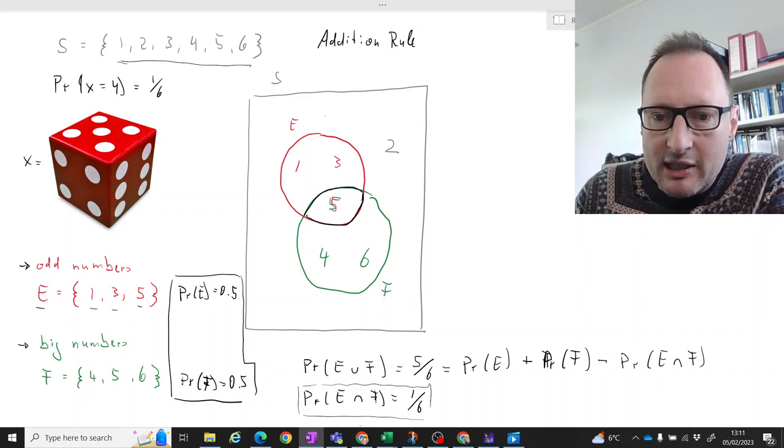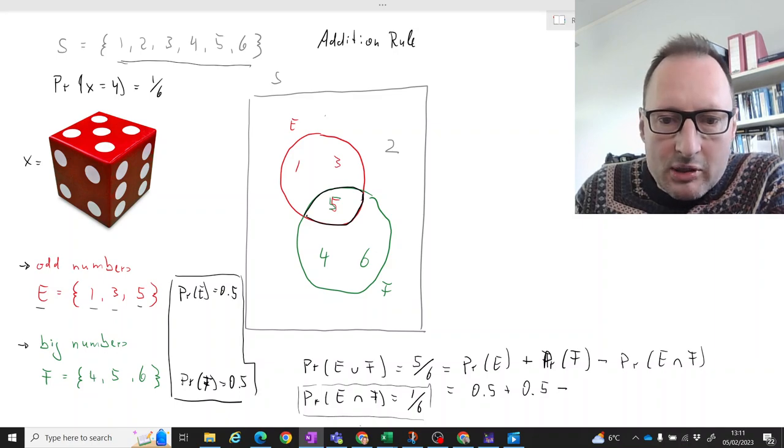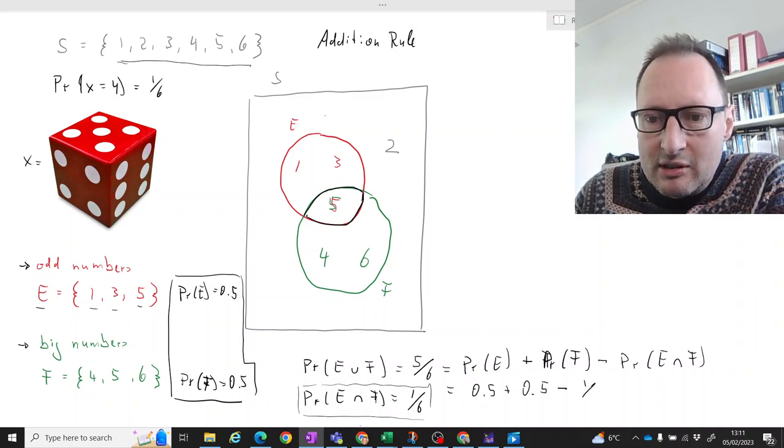What we then get is 0.5 plus 0.5 minus 1 over 6. So we have 1 minus 1 over 6, and that is 5 over 6.